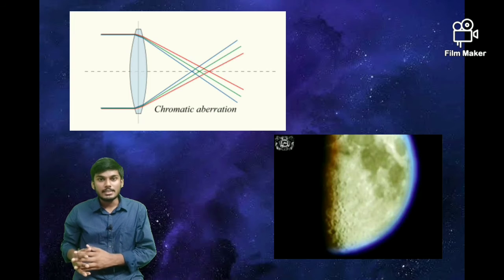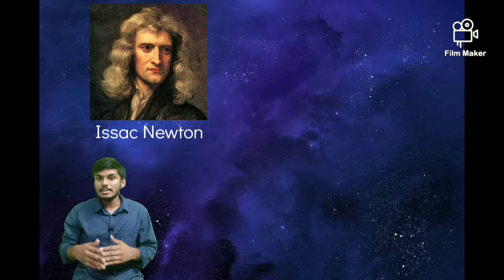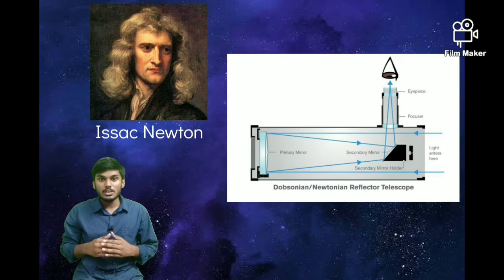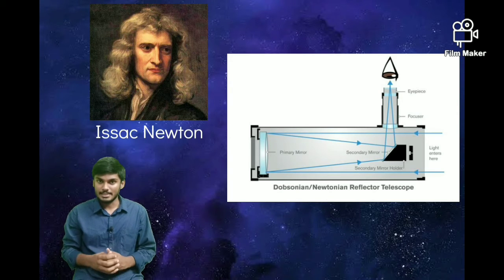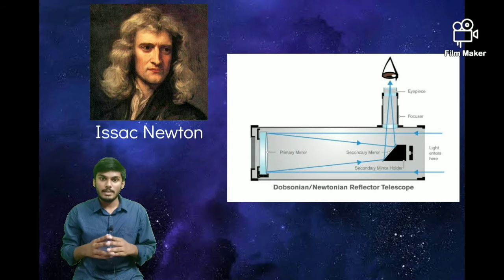To avoid this defect, in the year 1668, Isaac Newton invented his reflector telescope, which used the concave mirror to gather the light and focus it on the eyepiece. This was a very revolutionized discovery in the astrophysics field.